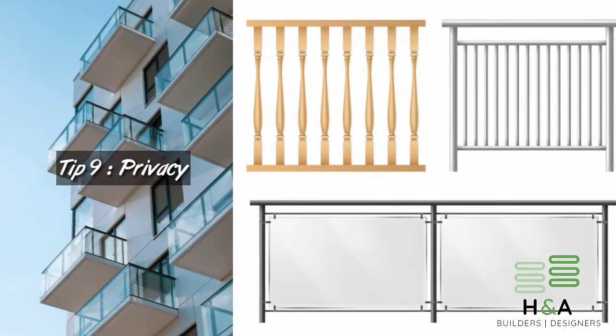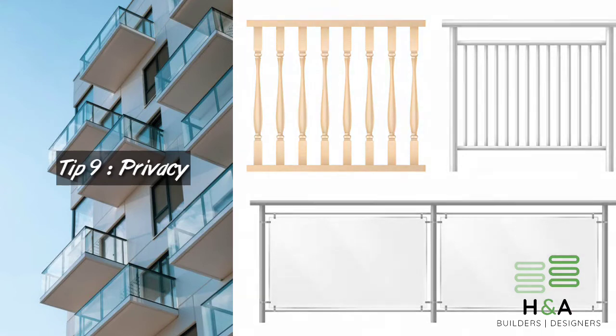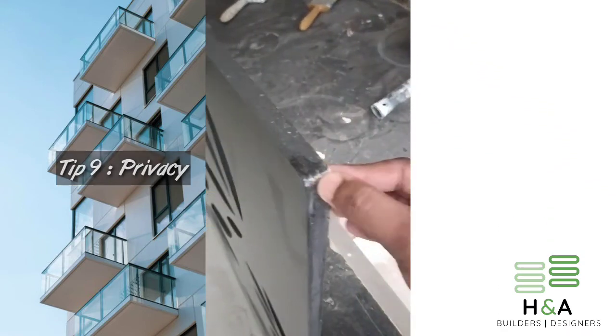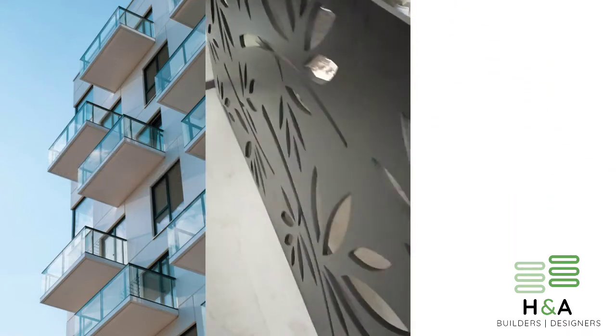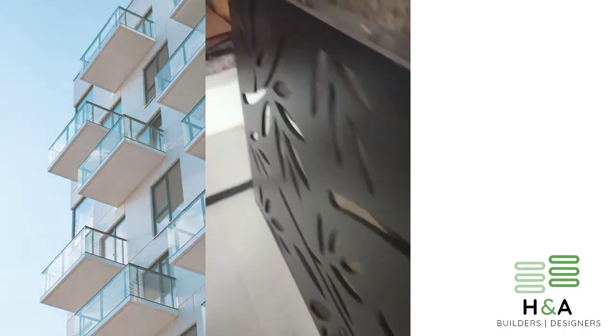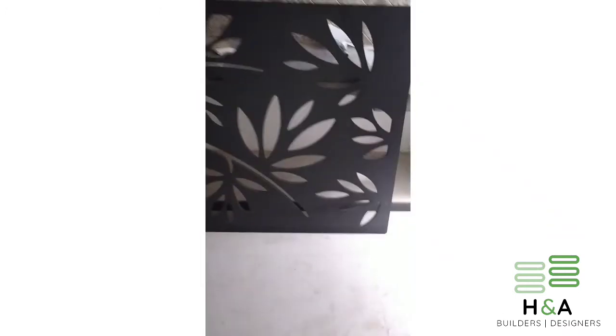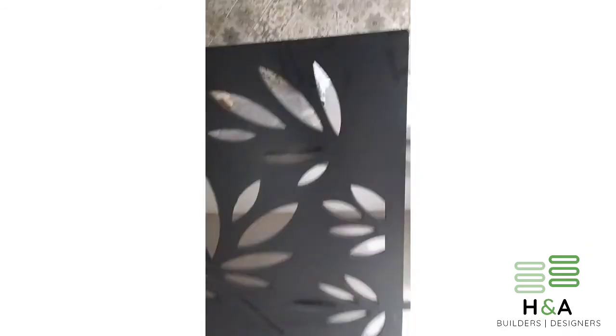Tip number nine: privacy is important to maintain. For maintaining privacy, we can use CNC cutting jali or sandblasted glass for balconies or openings. Nowadays WPC panels with CNC cutting give your front elevation a natural and effortless look. This is one of the best products to be used as an exterior-grade material, and they also have high impact and tensile strength.